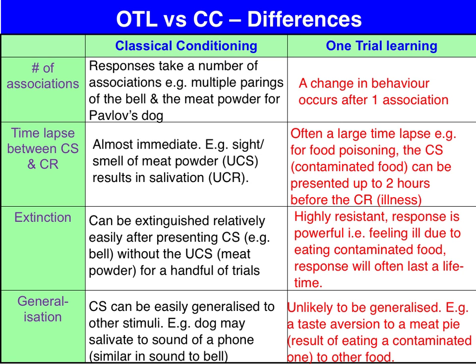In terms of differences between OTL and classical conditioning: classical conditioning, by definition, requires repeated pairings of two previously unrelated stimuli. So for Pavlov and the dog, pairing the sound of the bell with the meat seven times before the association is made. With OTL, we only need one pairing — i.e. contamination and fish — and after that one unpleasant experience, we've got a taste aversion to that fish.